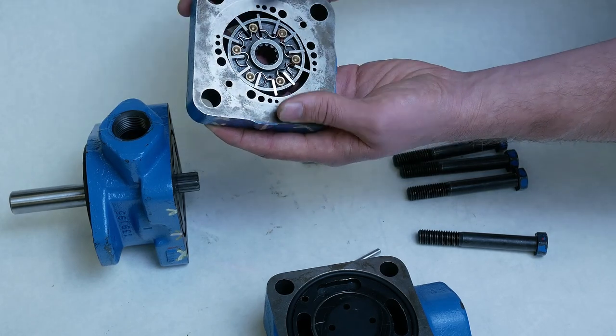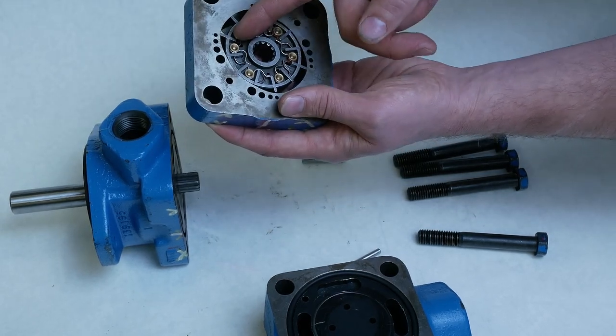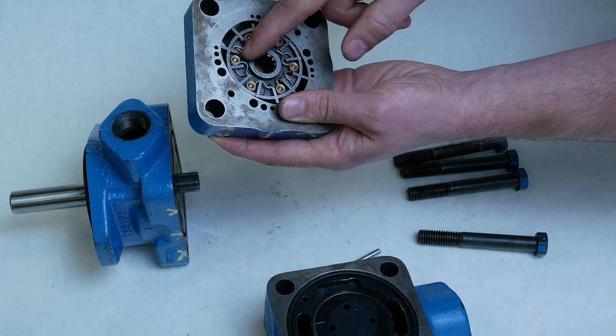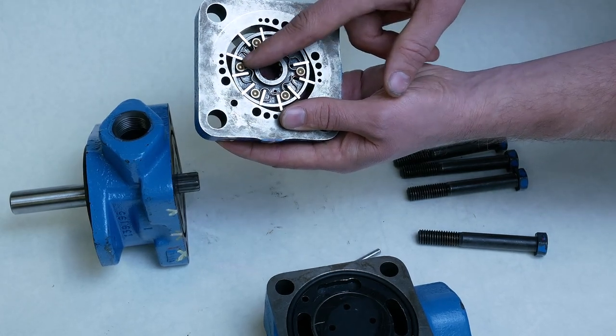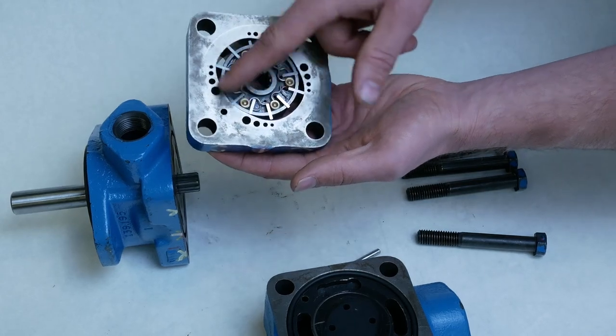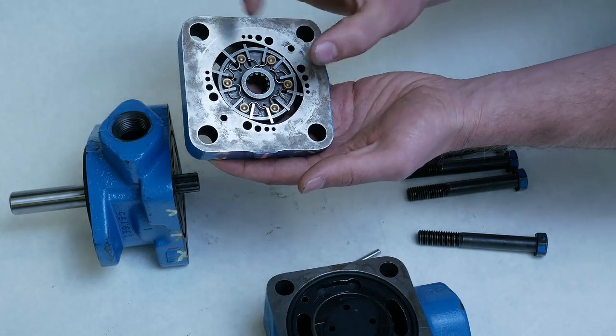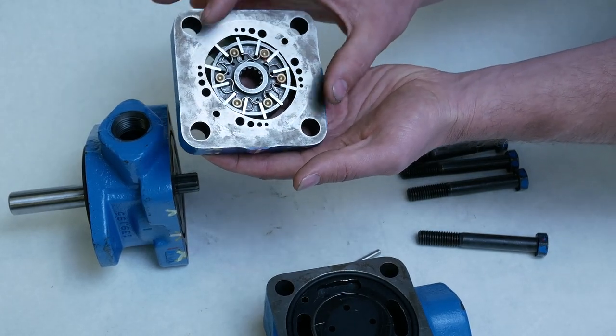And I'll show you that here, where we'll take a seal pick and pull these back so that this leg of the spring is actually pushing on the backside of the vane. Otherwise, each of these vanes should be pushed out against the cam ring.